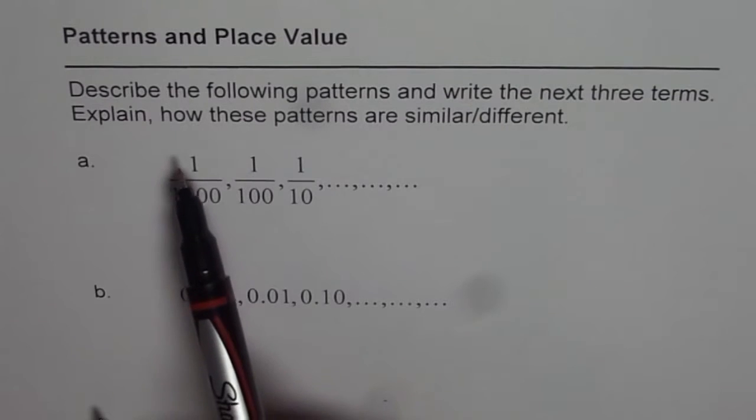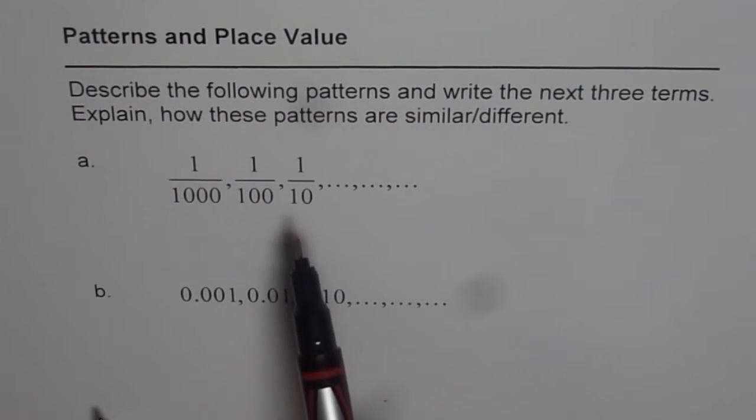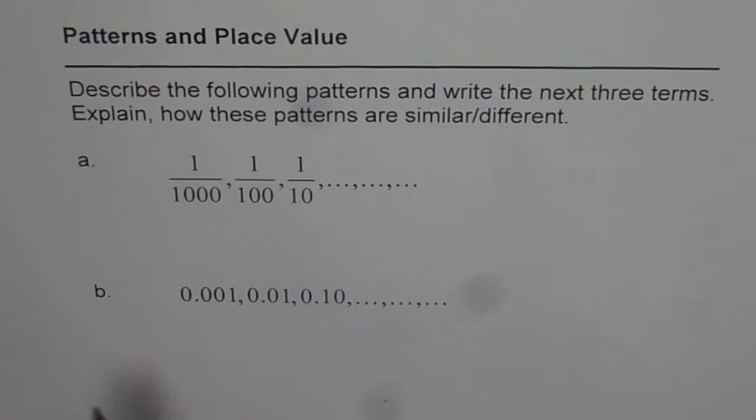So the first one is 1 over 1000, then we have 1 over 100, 1 over 10 and then you write three terms. The second one is 0.001, 0.01, and 0.1. So these are in decimal numbers.